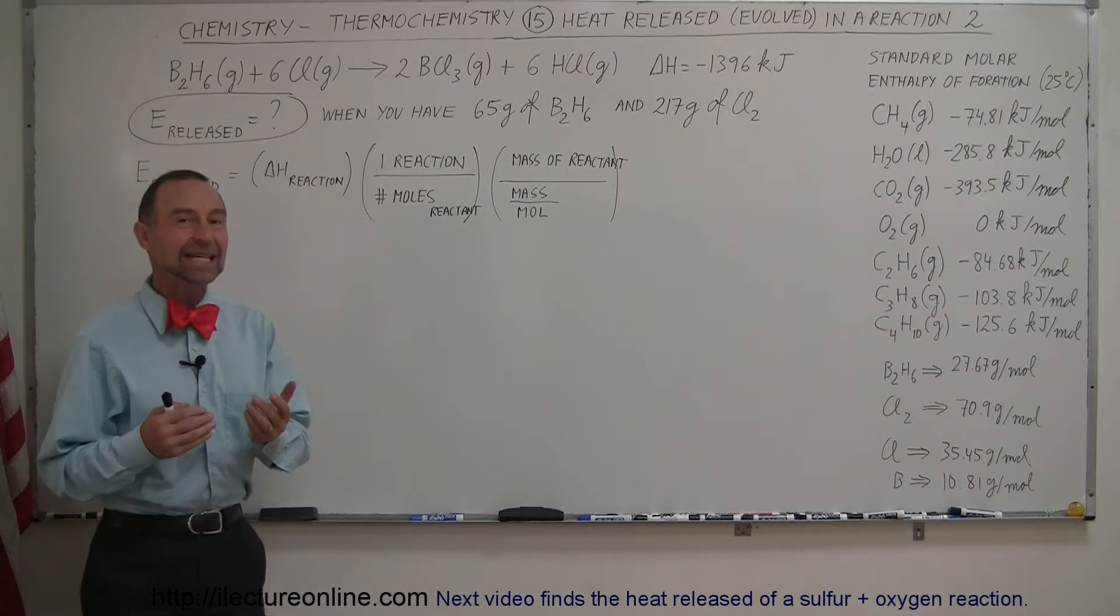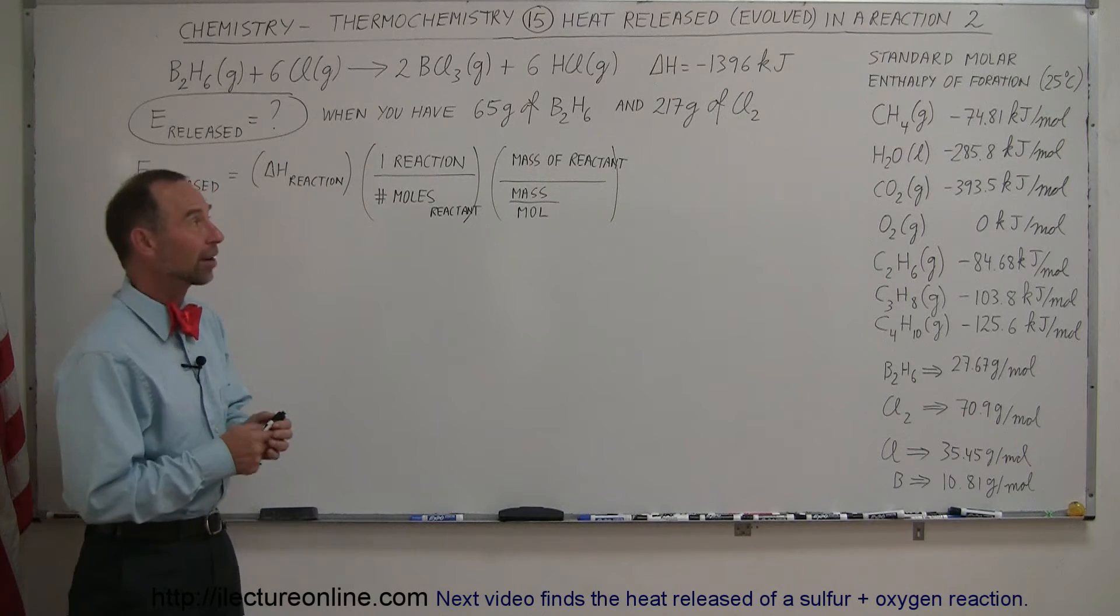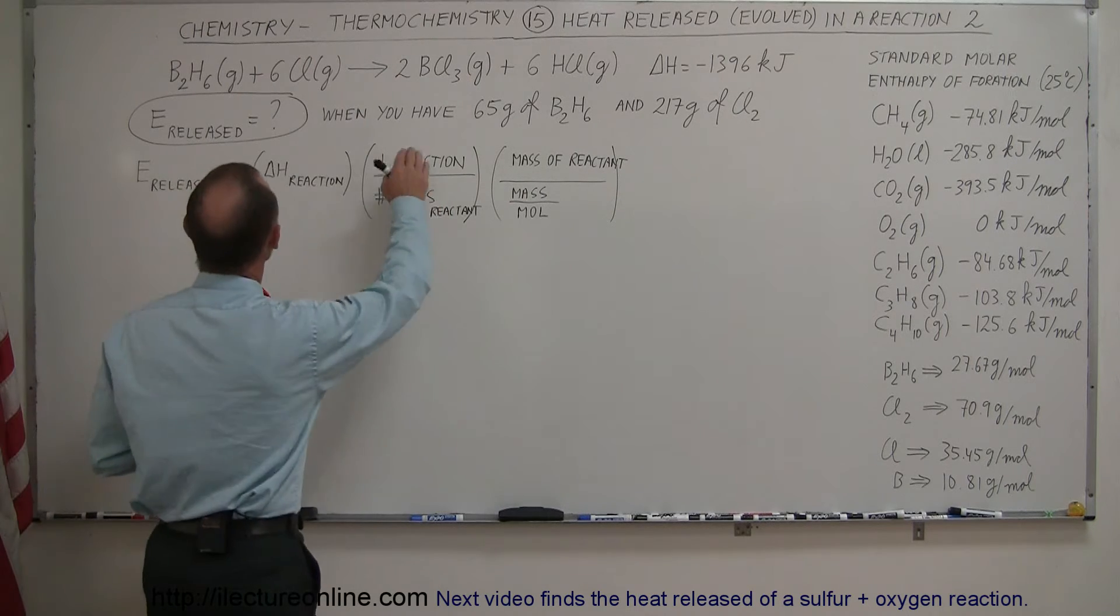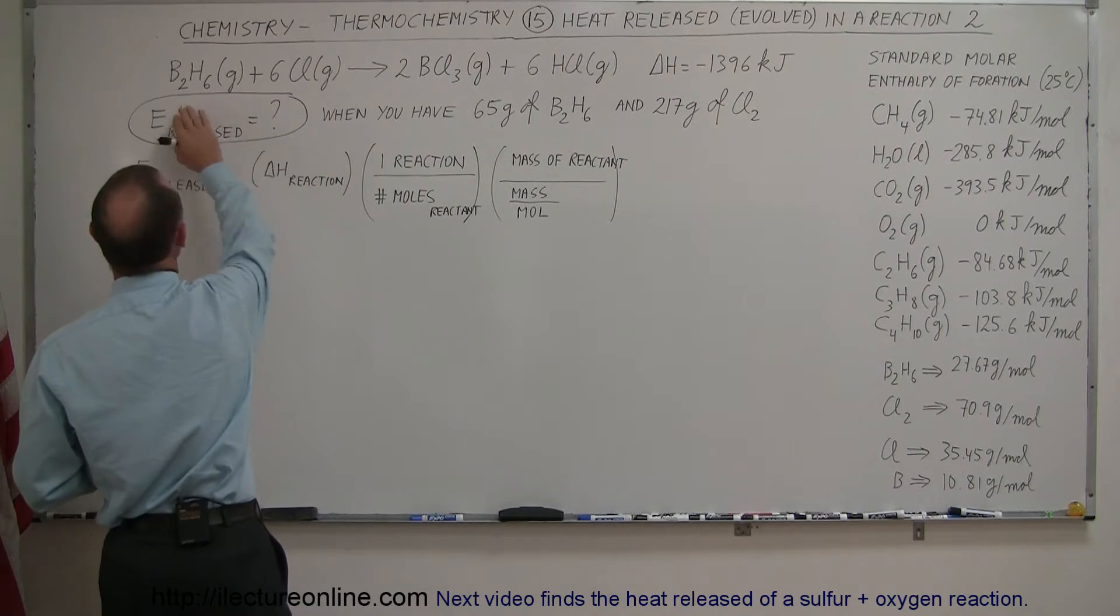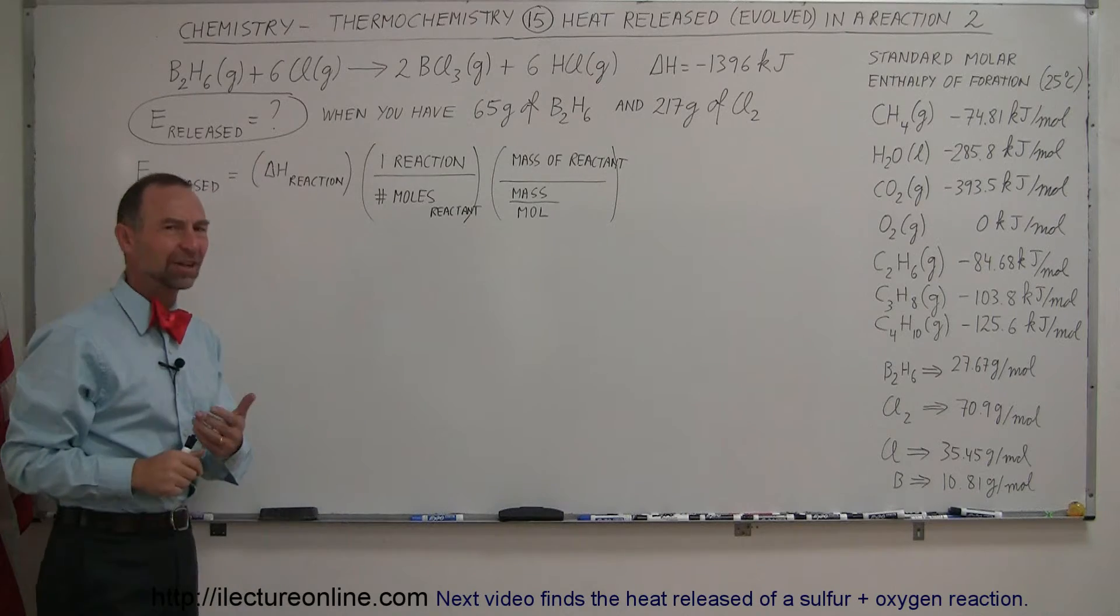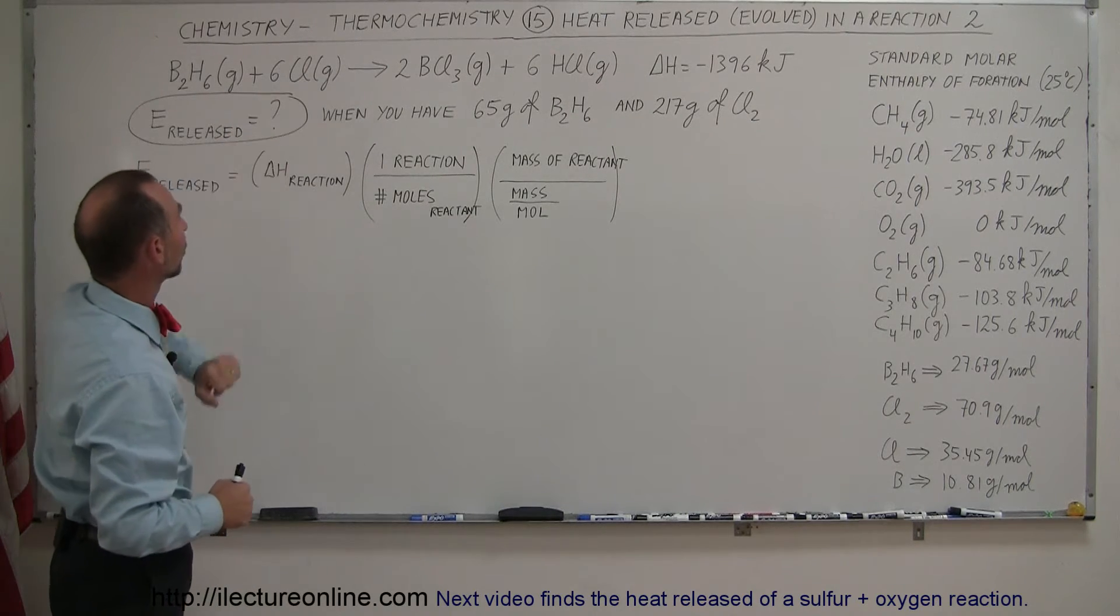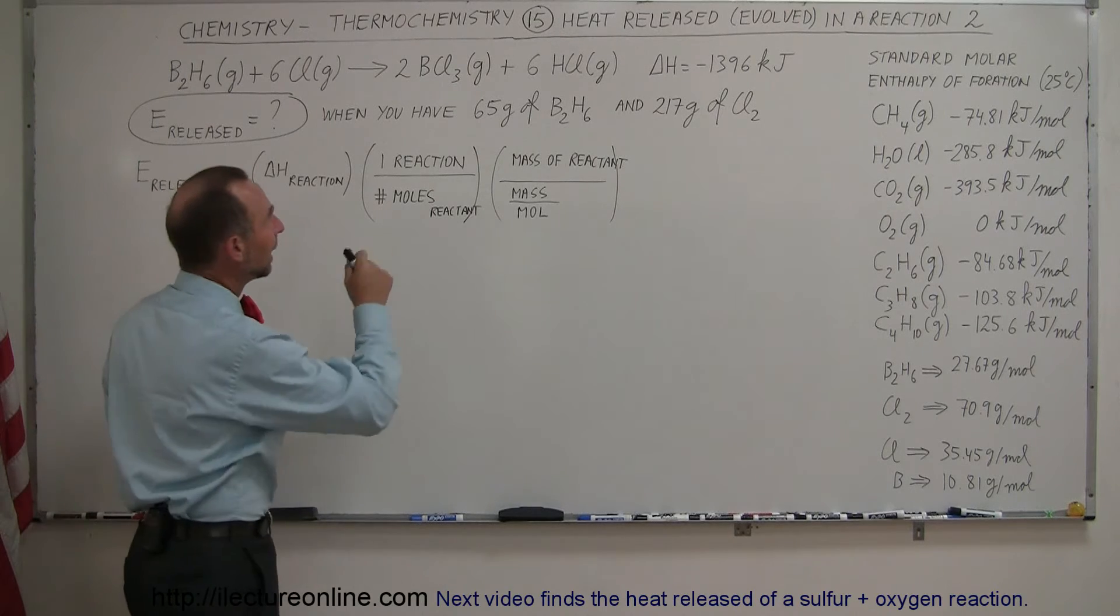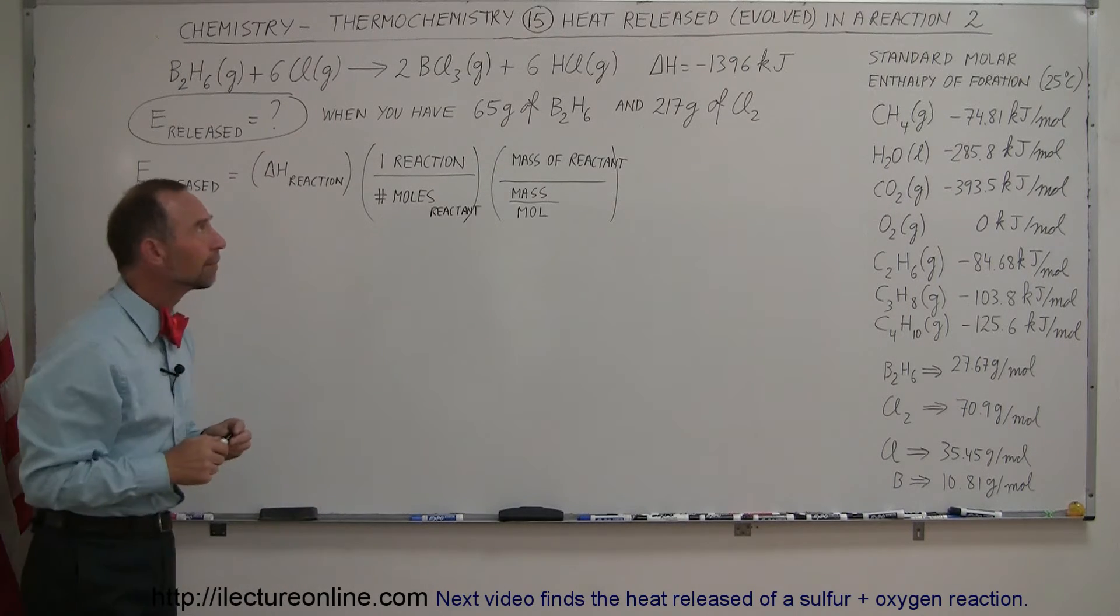Here's our next example: how to calculate the heat evolved or released in a reaction. In this case, we have two reactants: diborane, also called boron hexahydride (B2H6), and chlorine gas (Cl2). We put them together and end up with boron chloride (BCl3) and hydrogen chloride (HCl), both gases.